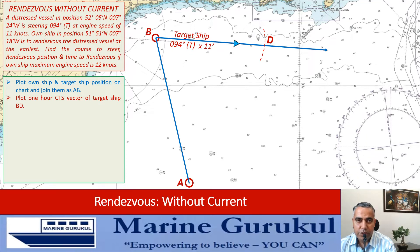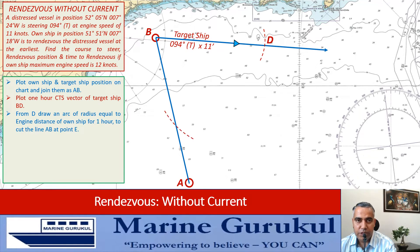Now, with our compass centered at point D (Delta), where the target ship one-hour course steered vector ends, we draw an arc with radius equal to our ship's engine distance for one hour, which in our case is 12 miles. This arc is centered at point D (Delta) and the radius is equal to our engine distance for one hour, which is 12 miles. This arc cuts the AB line at point E (Echo).